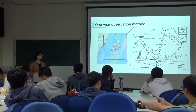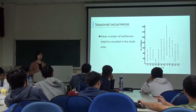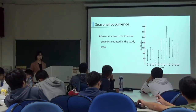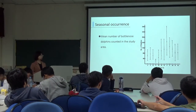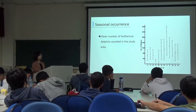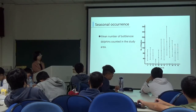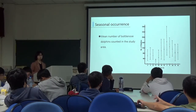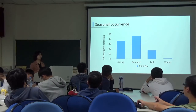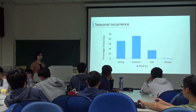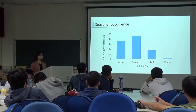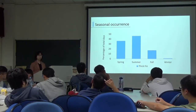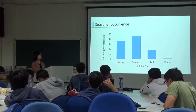Let's now shift from the methods to the results. The first result is about seasonal occurrence. Let's take a look at this figure. It shows the mean number of bottlenose dolphins counted in the study area. We can notice that dolphins' abundance declined from summer to fall, then recovered in the winter and declined again in the spring. Besides, the identifiable dolphins also confirmed a seasonal occurrence phenomenon. Let's take a look at these bar charts. It shows the sighting number of Thick Fin, one of the individual dolphins. The x-axis represents the season, while the y-axis shows the percentage of total dates that dolphins occurred. We can notice that Thick Fin tends to occur during spring and summer.